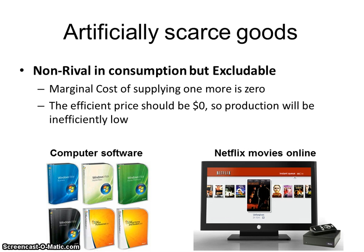Another example is movies you rent online. If you have a subscription to Netflix, you have to pay to sign in and have an account, but once you've signed on, you can watch the same movie that someone else is watching — just because you're watching it doesn't mean someone else can't watch it at the same time. So those are our four categories of goods: public, private, common resources, and artificially scarce goods.